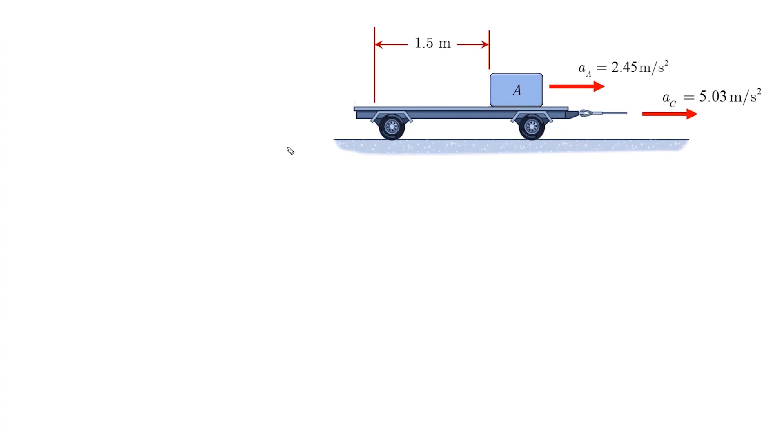Why is it making sense? Because when you find the acceleration of A relative to C, you will get A relative to C as a negative value, and this physically makes sense,